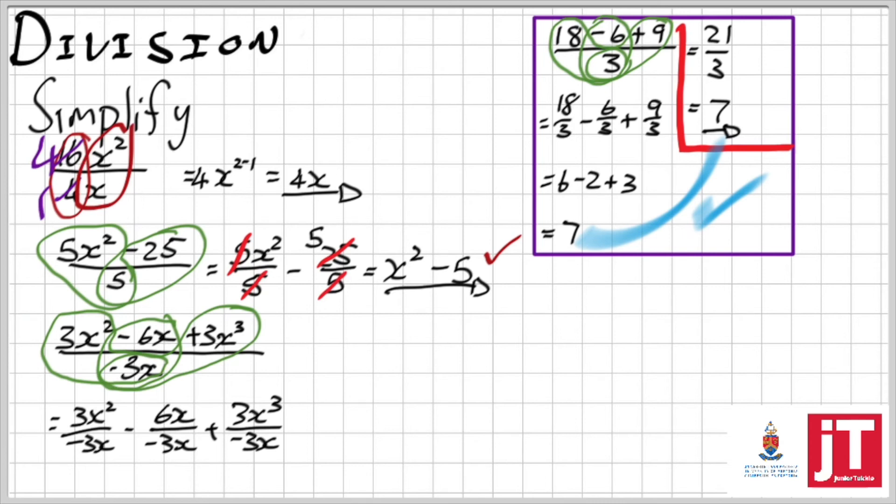Now one by one I'm going to handle these terms. Let's start with the first one. 3 goes into itself once and into 3 once, but there's a negative so it's negative. Then I'm going x squared over x to the 1. Well that's x to the 1, but remember I don't have to write that 1 there. I can just say negative x.